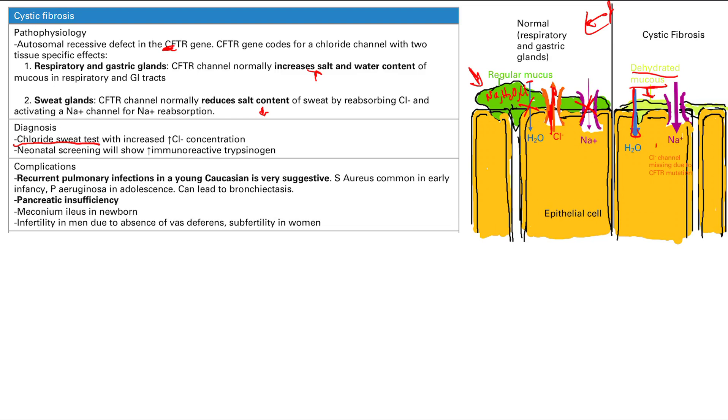Now let's talk about complications and symptoms from cystic fibrosis. Most of the problems come from the respiratory and gastric glands. Number one, recurrent pulmonary infections in young Caucasians is very suggestive. This thing hits Caucasians a lot more than other ethnicities. You're going to get the super thick mucus in your lungs that's not going to drain out. It's not going to be removed from your airway tract, so it's going to sit there and bacteria is going to love it. Bacteria is going to grow there and you're going to get recurrent pulmonary infections.